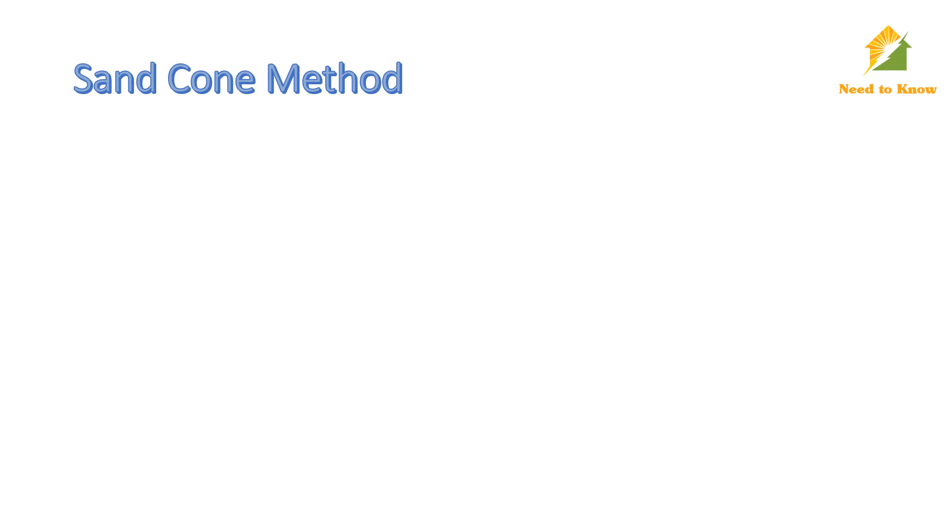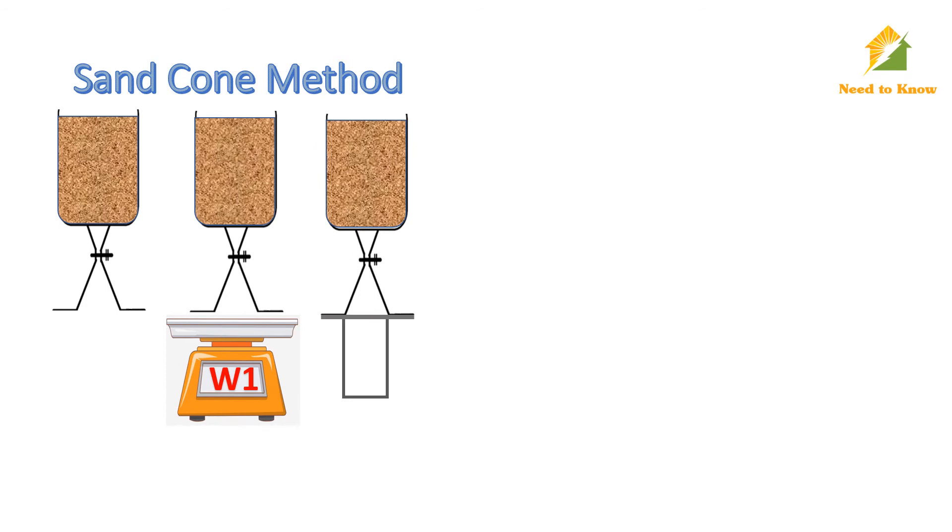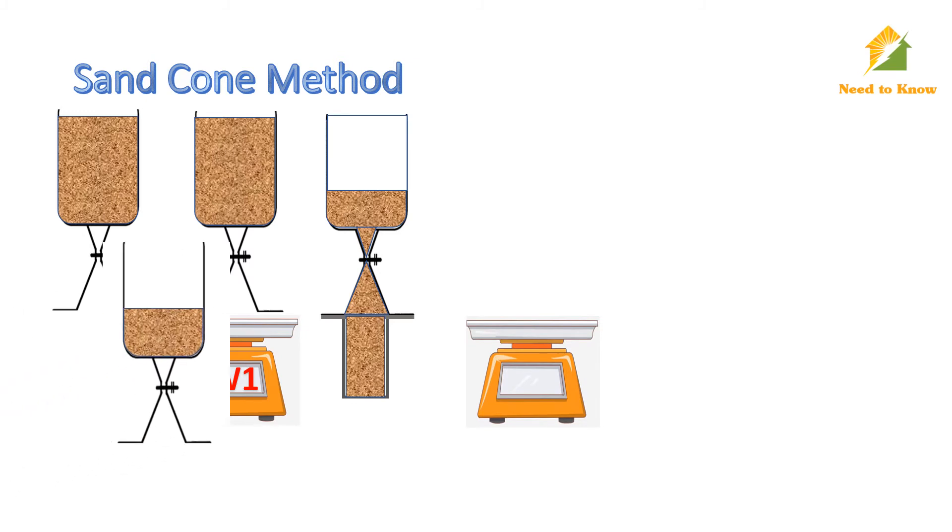Take a sand cone apparatus, keep the valve closed, fill it with calibrated sand and measure its weight W1. Then we put the sand filled apparatus over the calibrating container, open the valve and allow the sand to fill the container. When the sand flow stops, close the valve and measure the weight of sand cone apparatus W2.